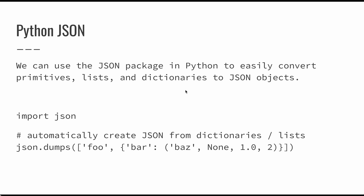Python has a JSON package that allows us to take primitives, lists, and dictionaries and convert them very easily to JSON objects, so we don't have to manually assemble them on the server. Using `json.dumps` — dump string — it will automatically take a list or object and create it exactly in JavaScript syntax. We can just create objects in Python and this package translates them for us.